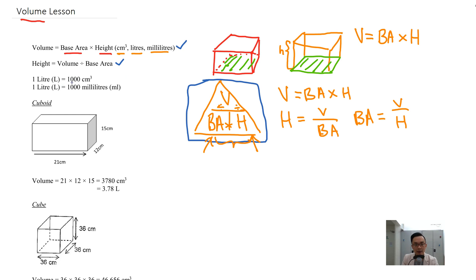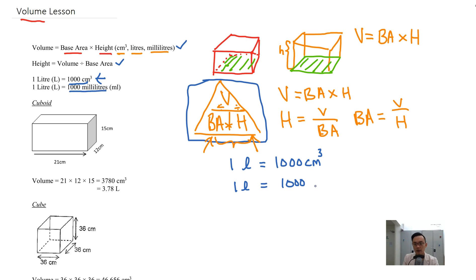One liter equals 1,000 cm³, and one liter equals 1,000 milliliters. This is something that you are going to need to remember. So one liter equals 1,000 cm³, and one liter equals 1,000 milliliters.